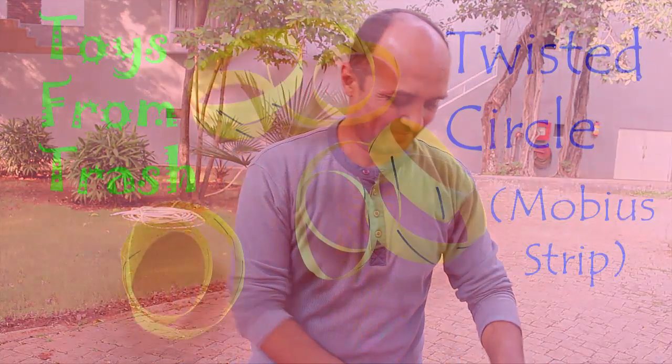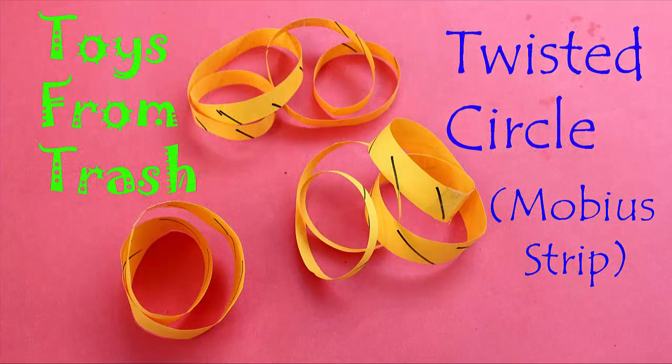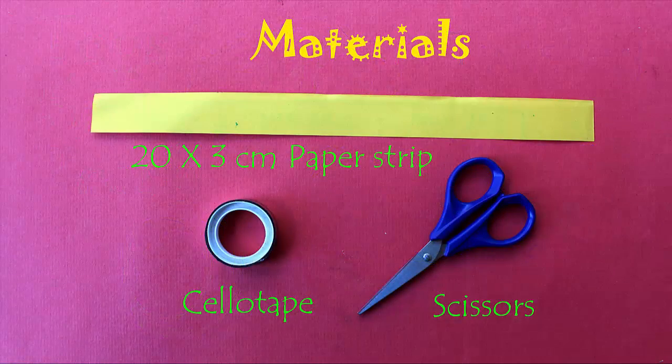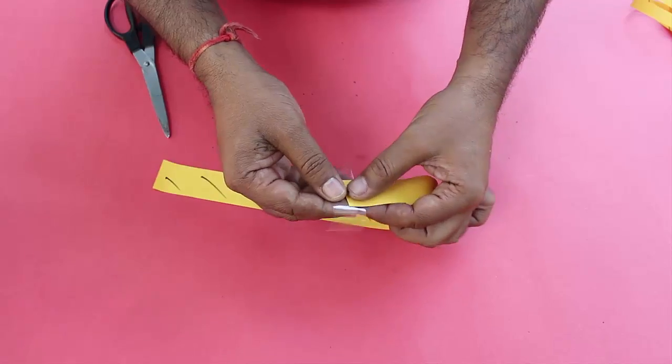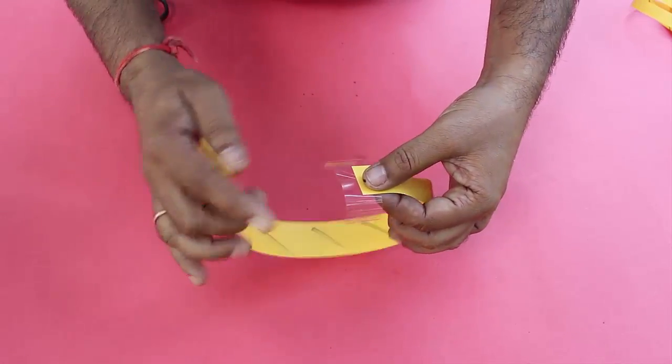We will play with Mobius strip some more and make interlocking circles like these by doing a 360-degree turn. We will first make a Mobius strip with a 360-degree turn.